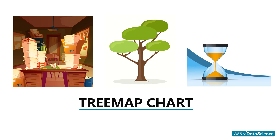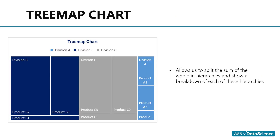One type of chart that is not used as often as it should be is the Tree Map Chart. Here is what a tree map looks like. It allows us to split the sum of the whole into hierarchies and then show an internal breakdown of each of these hierarchies.